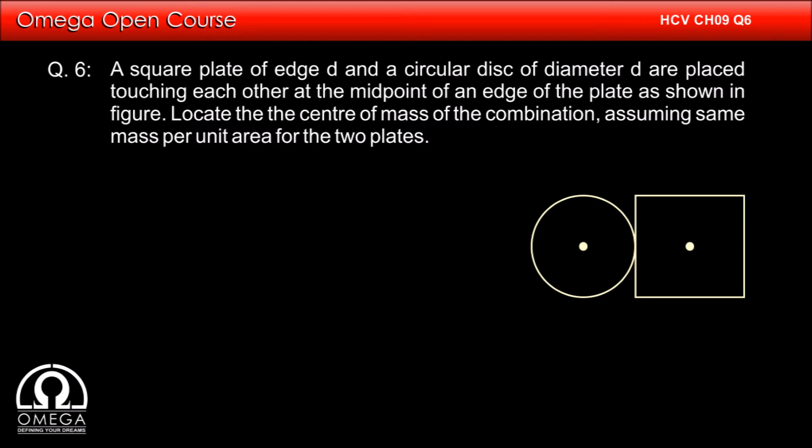Since mass per unit area of both plates is the same, the mass of the plates will be proportional to their respective areas. So the mass of the circular plate is proportional to pi d squared by 4, and that of the square plate is proportional to d squared.